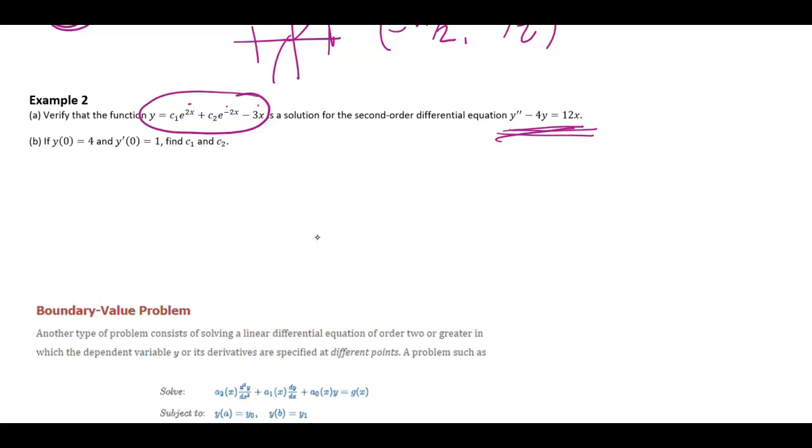So what I mean by that is like maybe we call a y1 e to the 2x, and I know that I need to go all the way up to the second derivative. So let's go y1 prime and y1 double prime, and let's see what happens when I plug in here. Well, I get 4e to the 2x minus 4 times e to the 2x. Okay, that gives me 0. So if I plug in this first term, really no matter what this c1 term is, I'm going to end up getting 0.